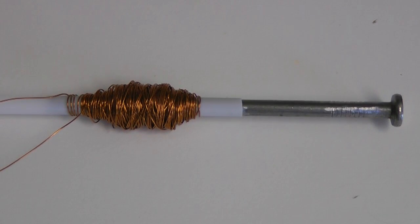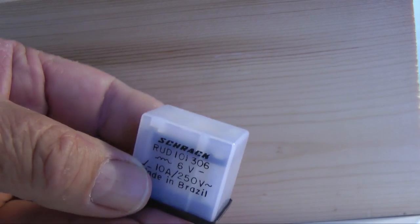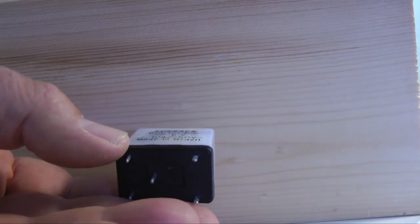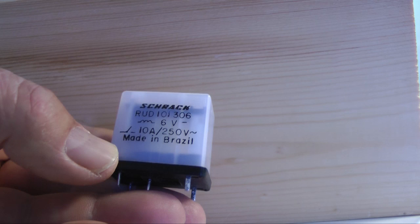This is another device that uses an electromagnetic coil. It is similar to a solenoid, but it is used to control electricity. It's called a relay, an electromagnetic switch.